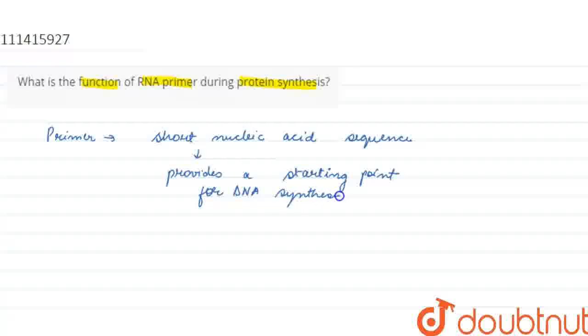Ab isme kya hota hai? Dekho, jaise hame pata hai, hamare DNA mein hame do strands dekhne ko milte hain, aur jab replication hoti hai, ye dono strands unwind ho jate hain, and yahan pe ek new strand ki formation hoti hai.